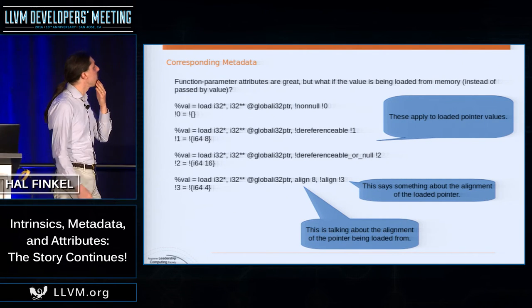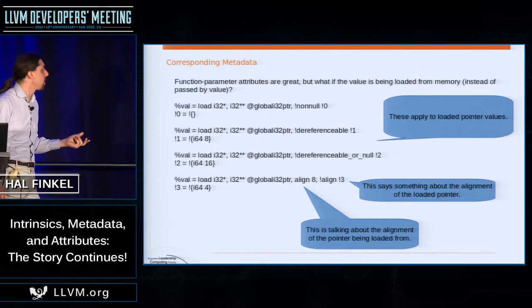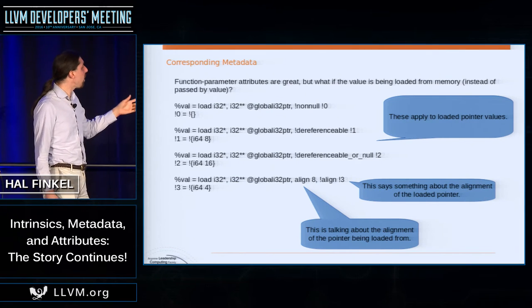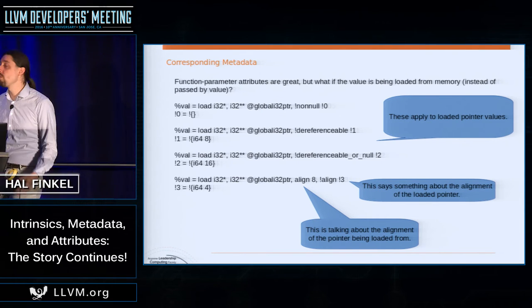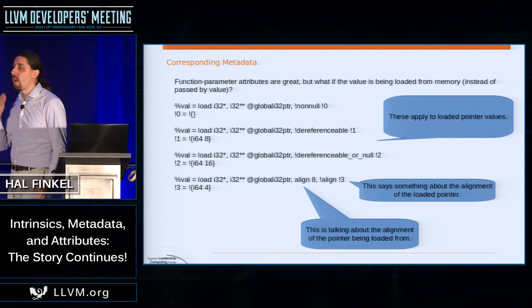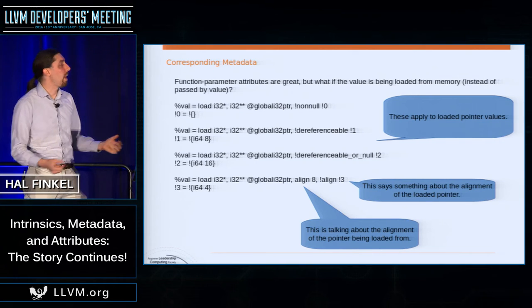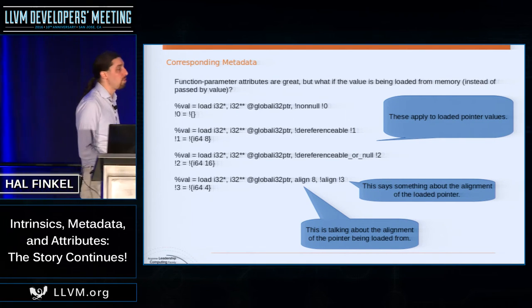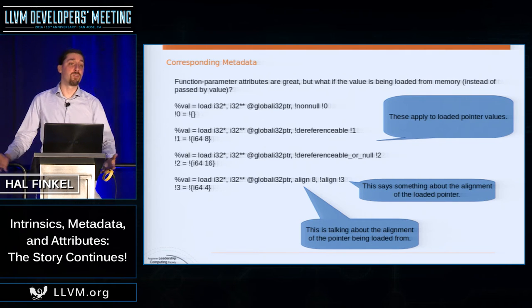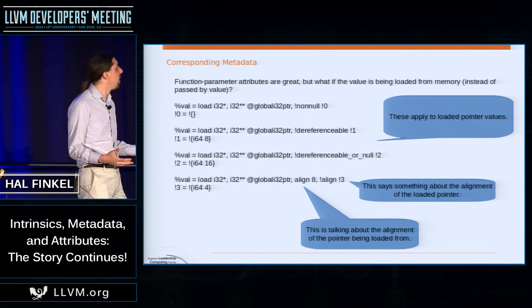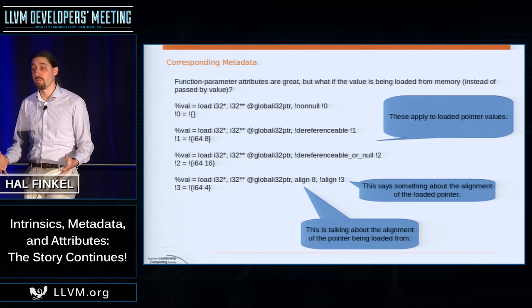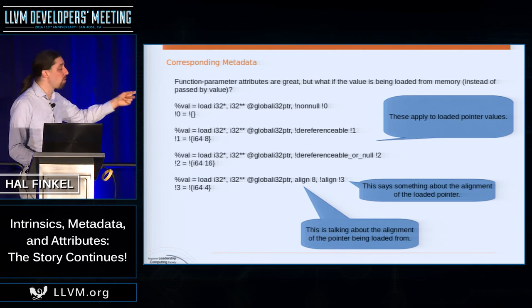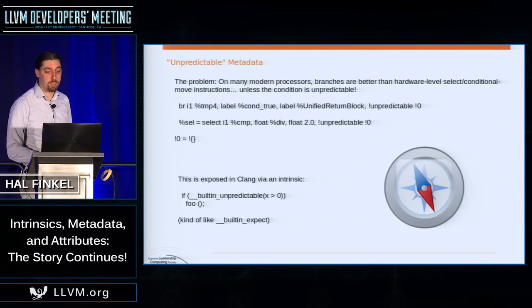We've also added metadata corresponding to attributes like 'dereferenceable' and 'nonnull'. Often the values you're looking at aren't function arguments — sometimes they're values you load from somewhere. You want to apply the same assumptions to loaded values as you would to function arguments, so we have corresponding metadata to handle that situation.